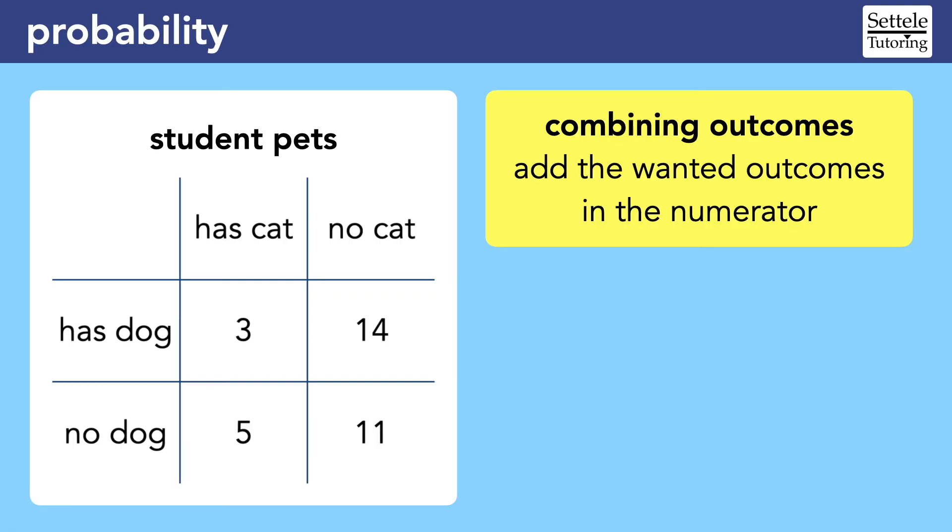Probability questions get kind of annoying and difficult if we need to combine outcomes. It's likely that we'll be given a chart that shows the number of times that each outcome happens. Usually, we will add multiple values in the numerator to capture all the outcomes that we want. For example, to find the probability that a student has a cat, we should again start with a fraction and focus on the denominator first.